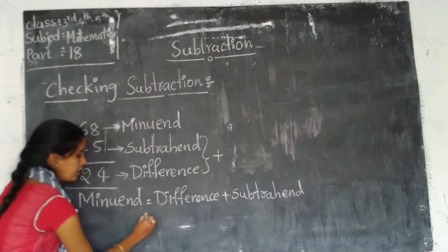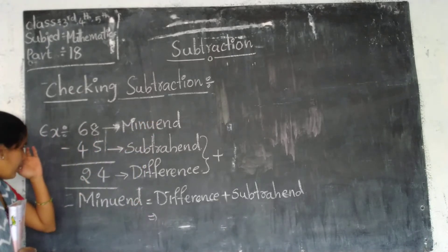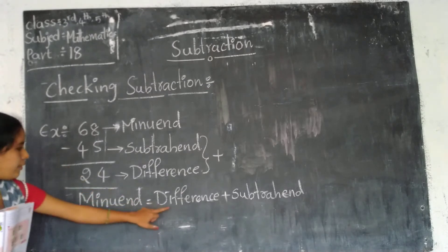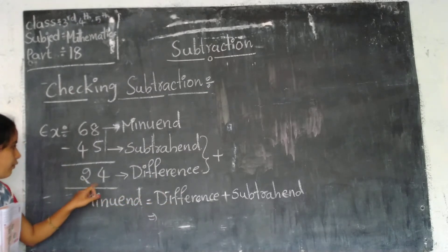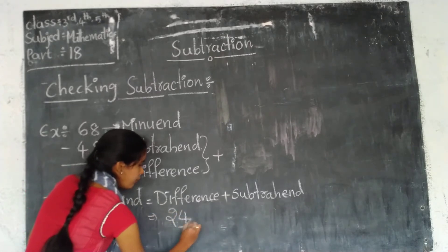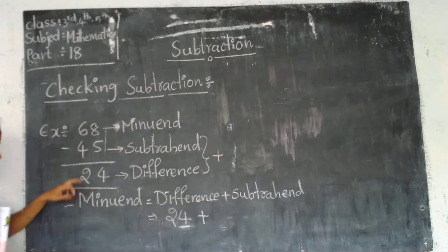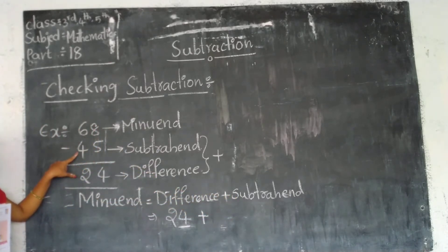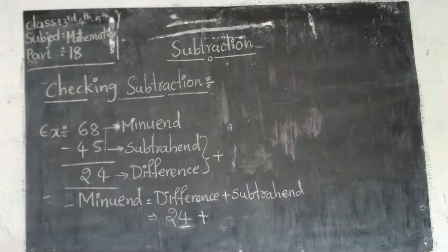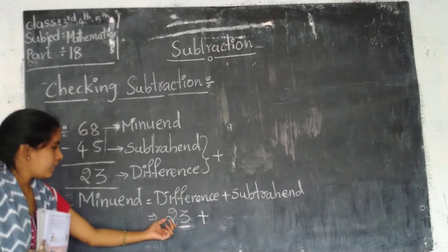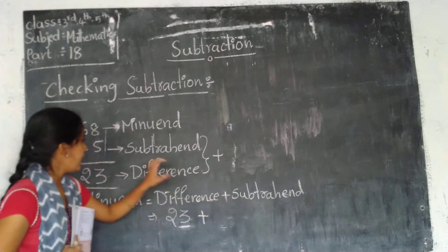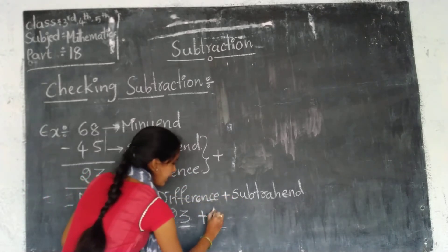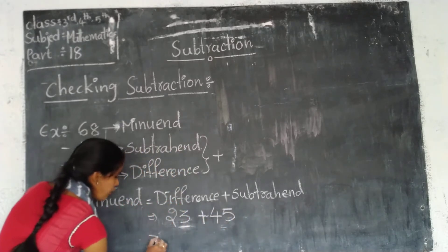Let's apply this formula. Where is the difference here? The difference is 23. Plus the subtrahend — where is the subtrahend? The subtrahend is 45.